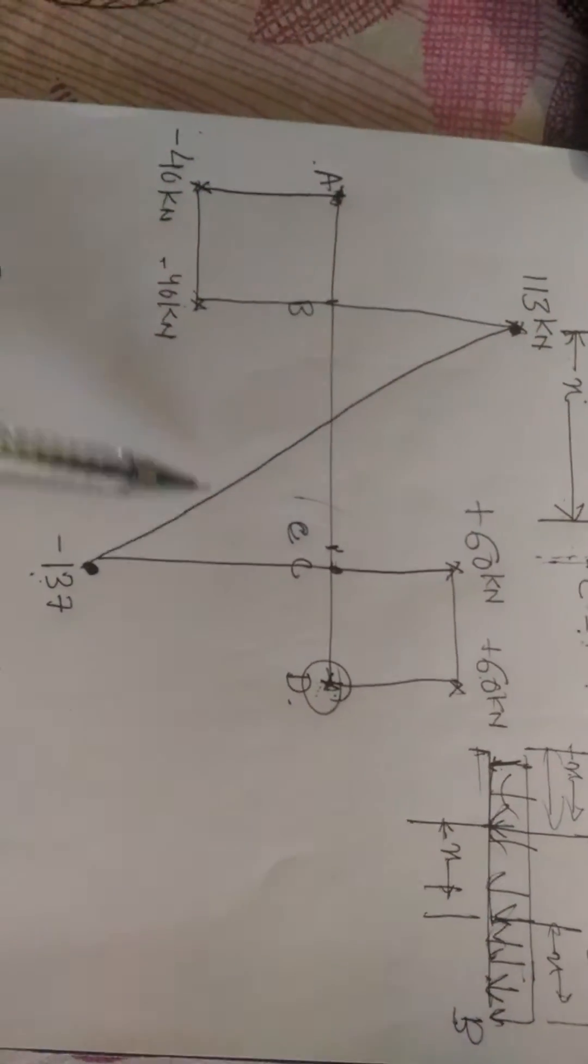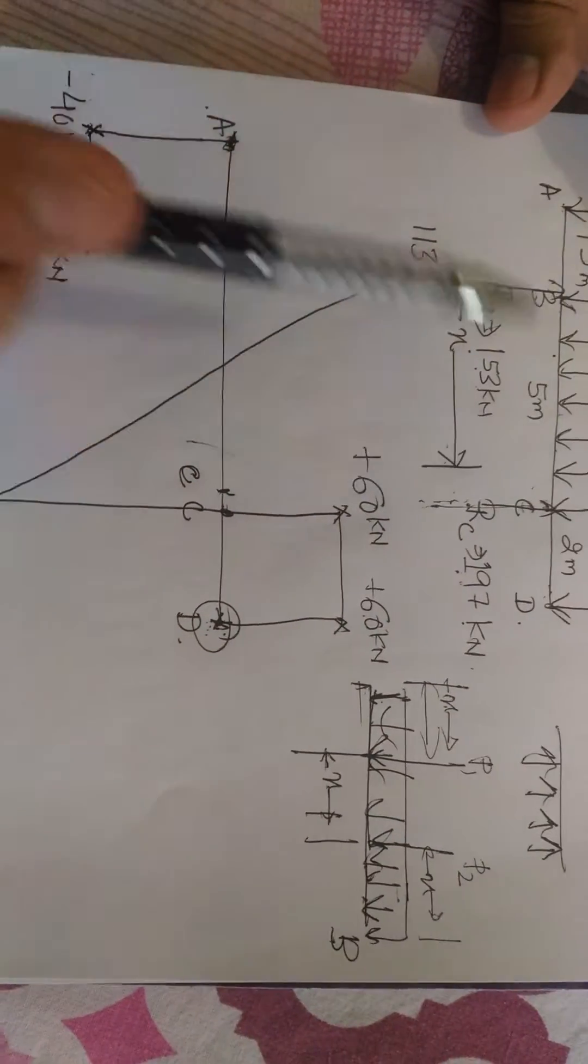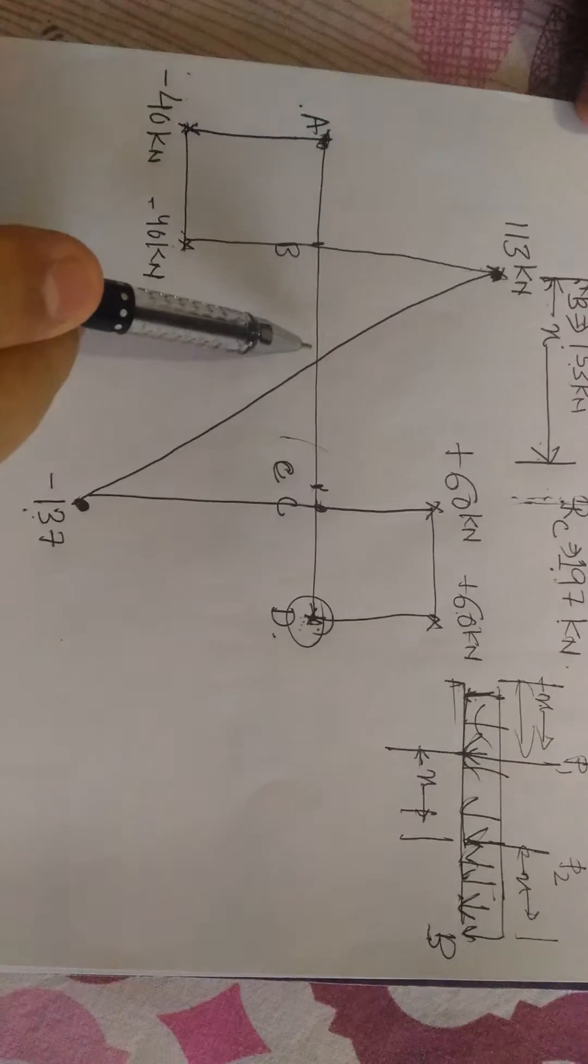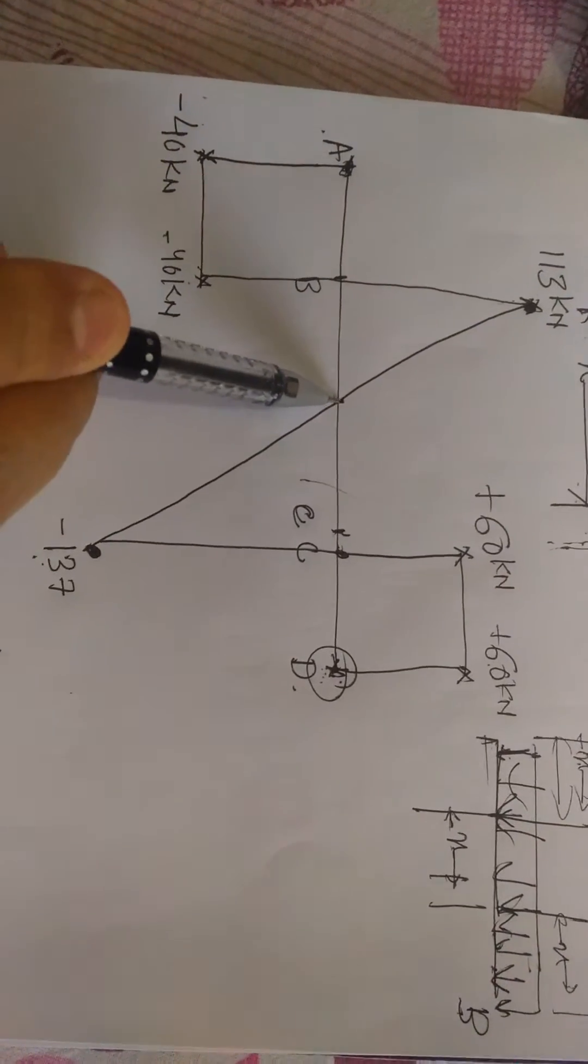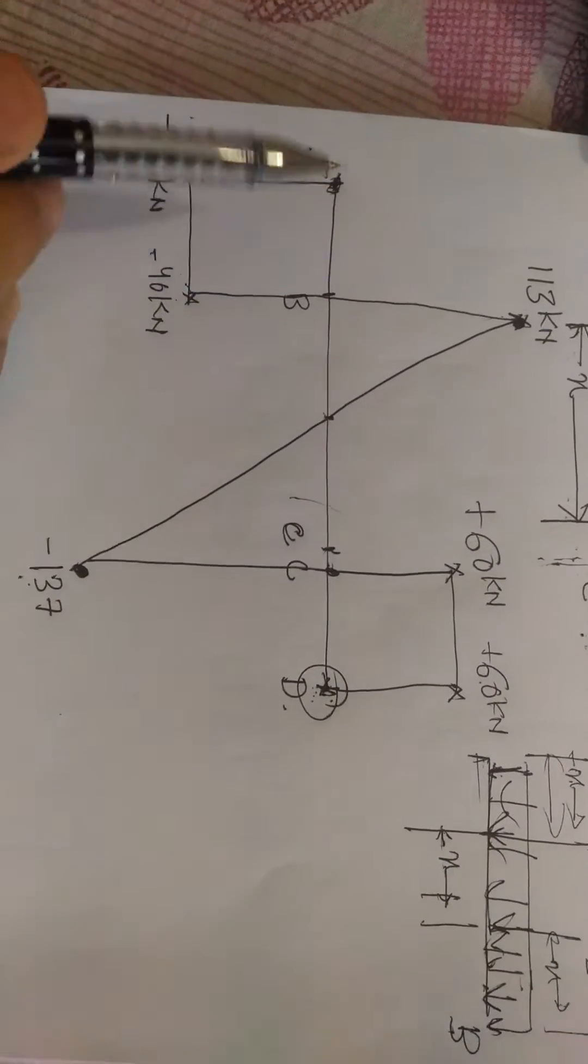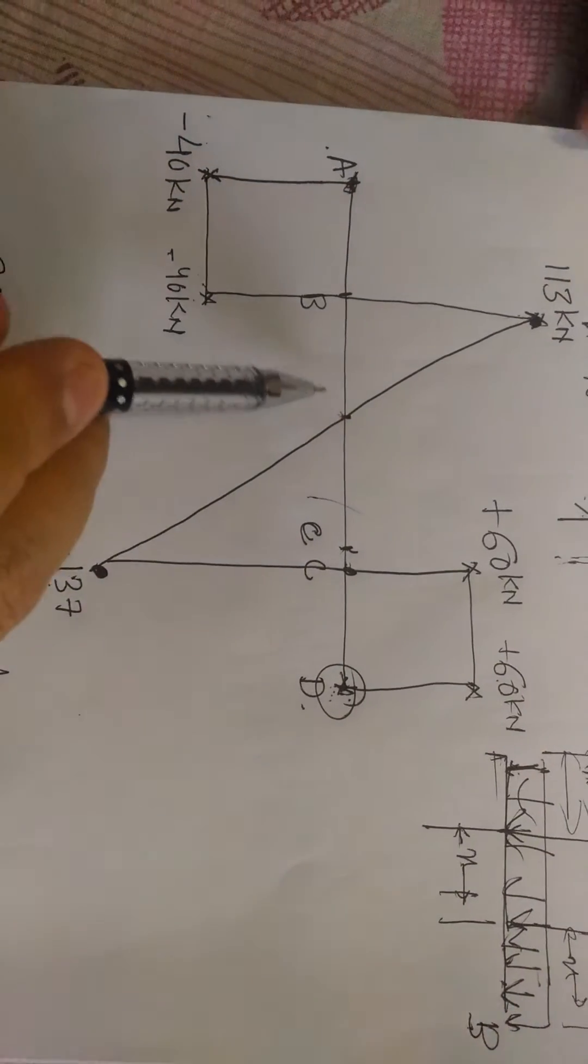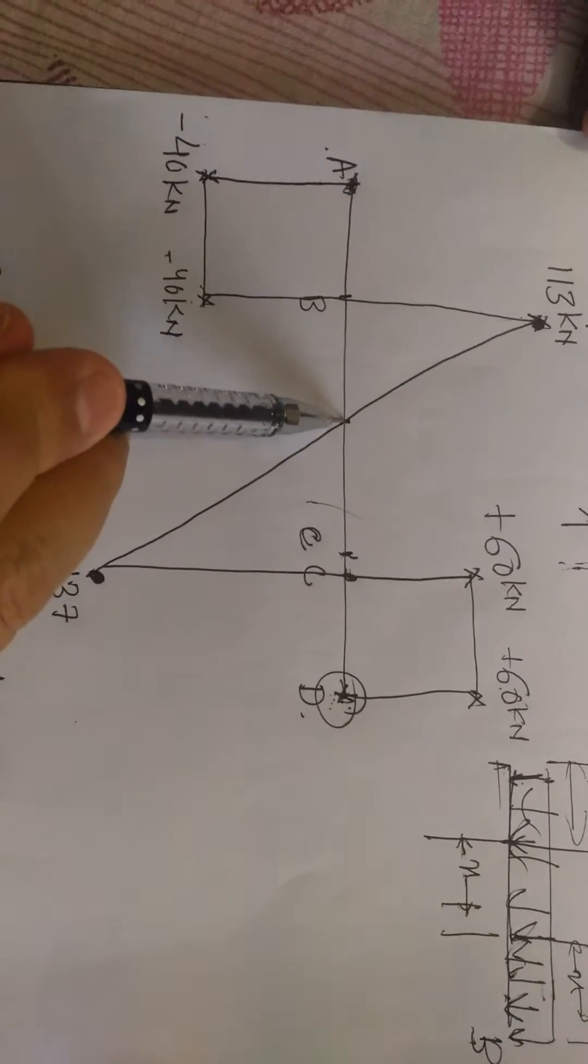Between the UDL, that is between B and C, the shear force line is crossing a particular point on the beam, or you can say the x-axis. This point is very important, so in this video I will explain how to calculate this point.